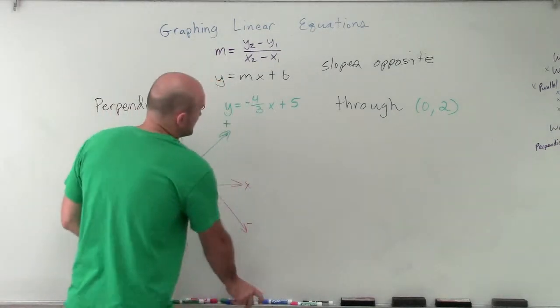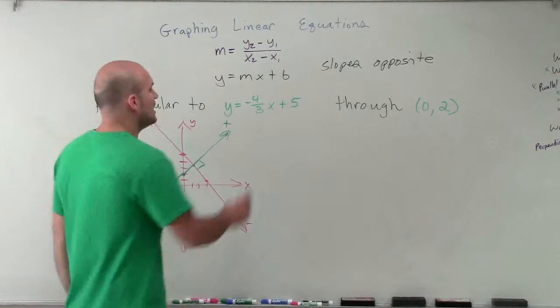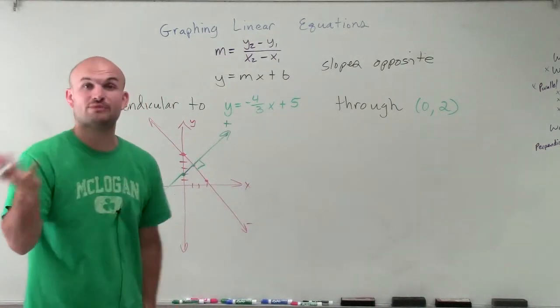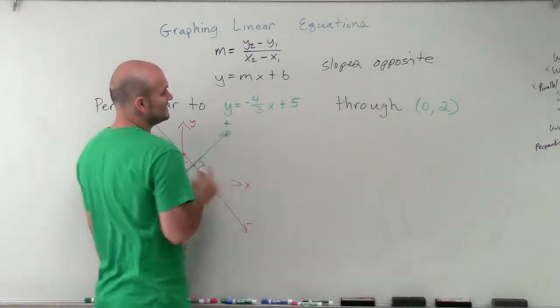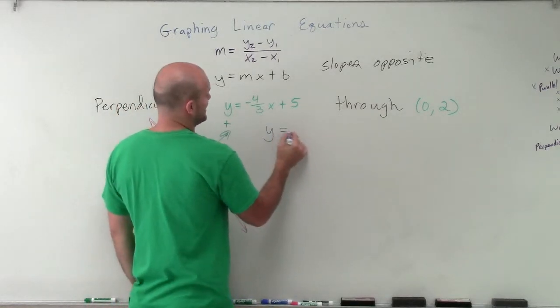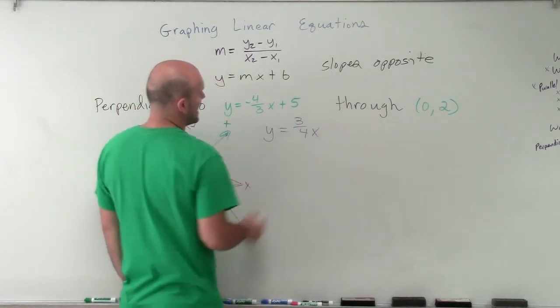So to write the equation of this one is actually going to be pretty basic. I need to make sure I find the opposite of negative 4 thirds, which would be a positive 4 thirds. And then I need to take the reciprocal. So it would be y equals a positive 3 fourths x.